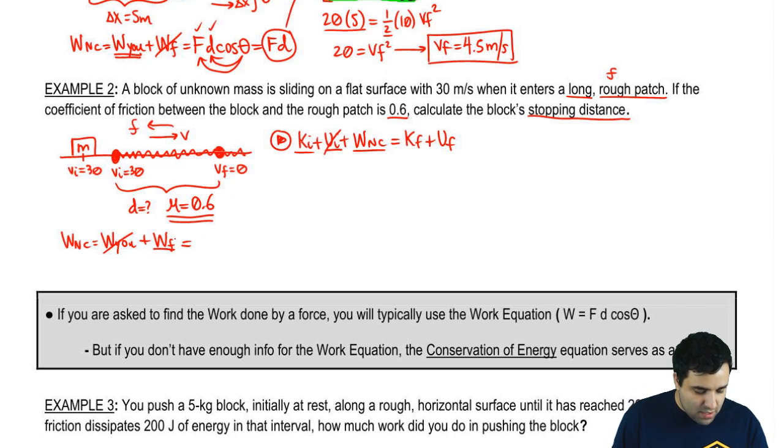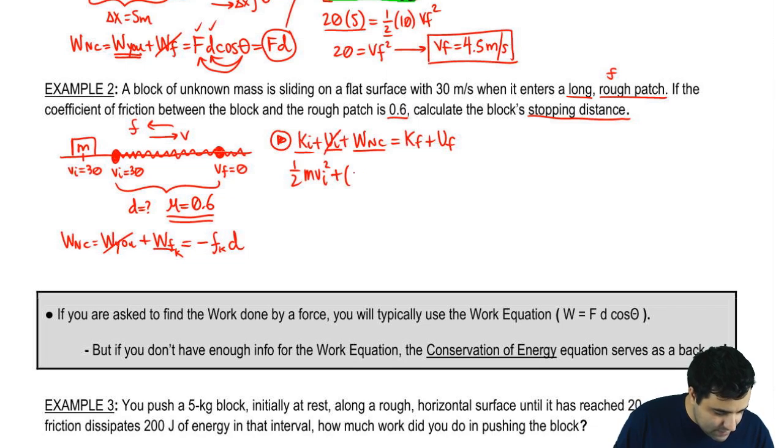There is work done by friction, and the work done by kinetic friction is negative friction distance. So we do have this. I'm going to replace this here: half m v squared initial plus negative friction distance. Let's keep going to the other side.